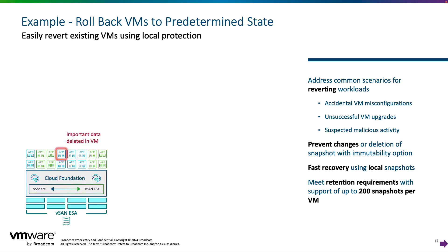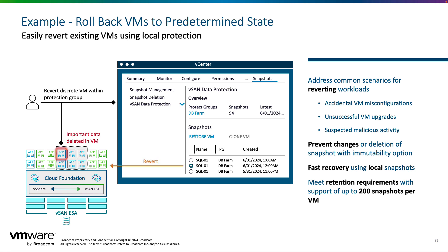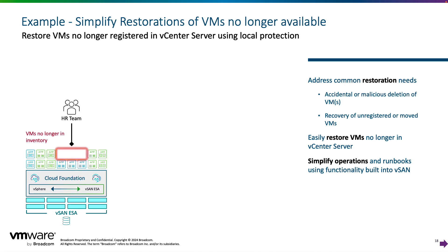vSAN data protection can also augment existing data backup solutions for quick restores of virtual machines. The existing VADP APIs will continue to work in conjunction with this, and one or more VMs can easily be reverted back to a desired point in time using snapshot management. This can be an ideal solution for an accidental VMware misconfiguration, unsuccessful upgrade, or even suspected malicious activity restoration. In this example, a database virtual machine is being restored back from a deletion activity.